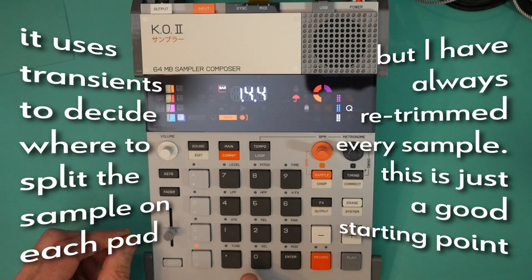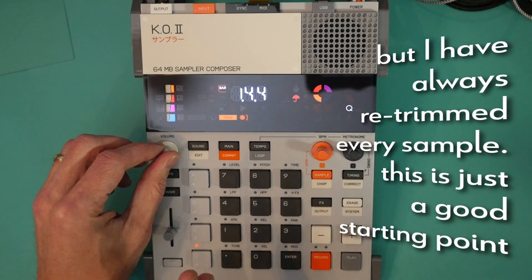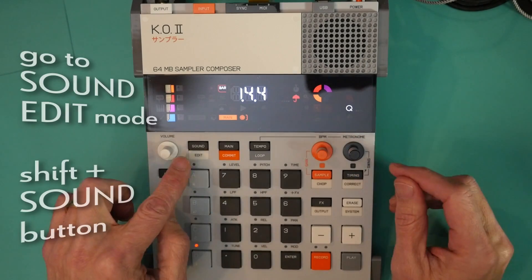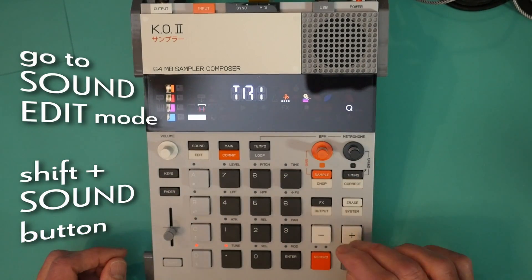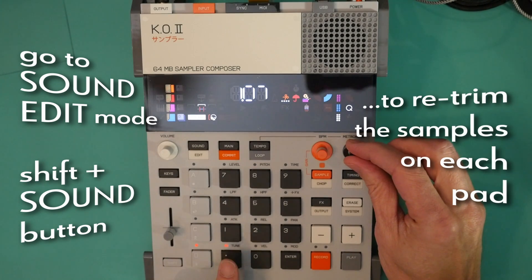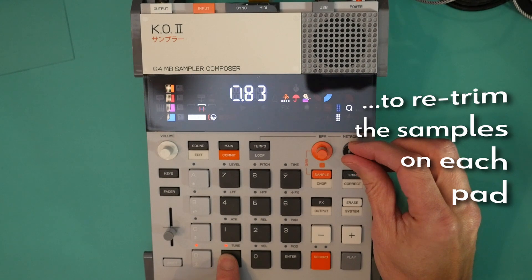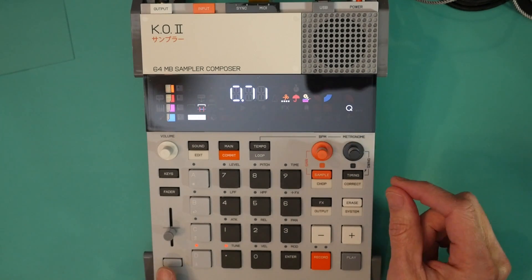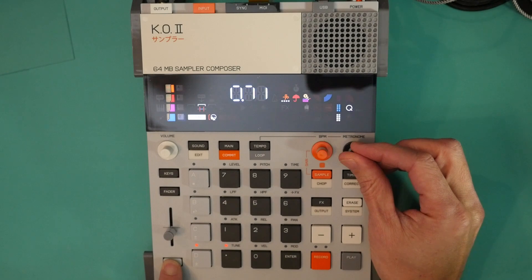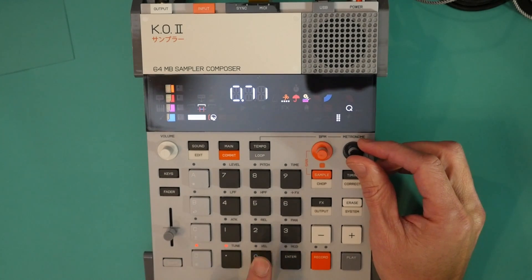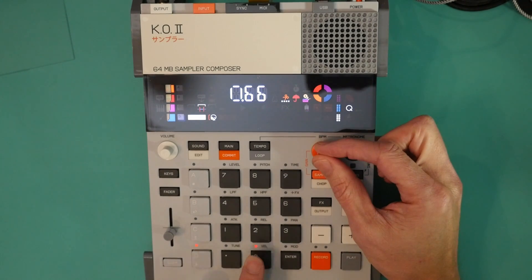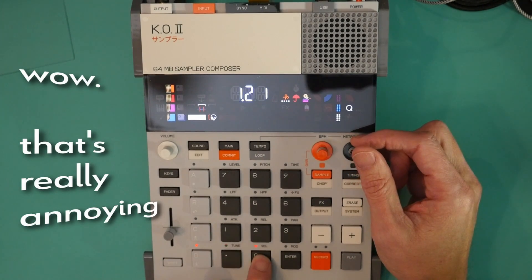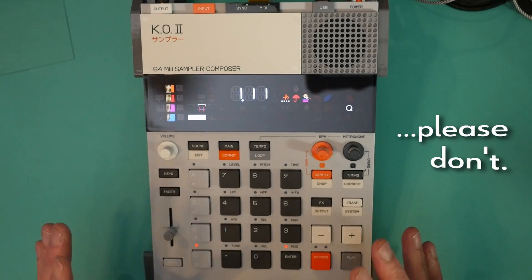Now what's happening behind the scenes is that sample is on every pad, but the trim, the start and end point of each pad is different. So if I wanted, I could actually change the trim of this by going into sound edit. Go to trim. And I can trim it finer by holding shift. And it makes it a little finer just one little bit of time. And now this one I'm going to change the start point. I could trim all the pads now and make them a little bit more perfect. And I won't spend the time to do that right now.